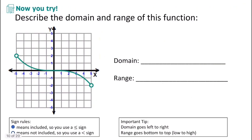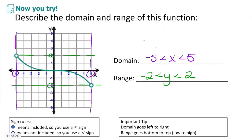Pause the video and try describing the domain and range of this function on your own. This one goes from negative 5 to 5 in x, and we have open circles at both ends, so it's negative 5 less than x less than 5. The y values go from negative 2 with an open circle to positive 2 with an open circle, so we have negative 2 less than y less than 2.